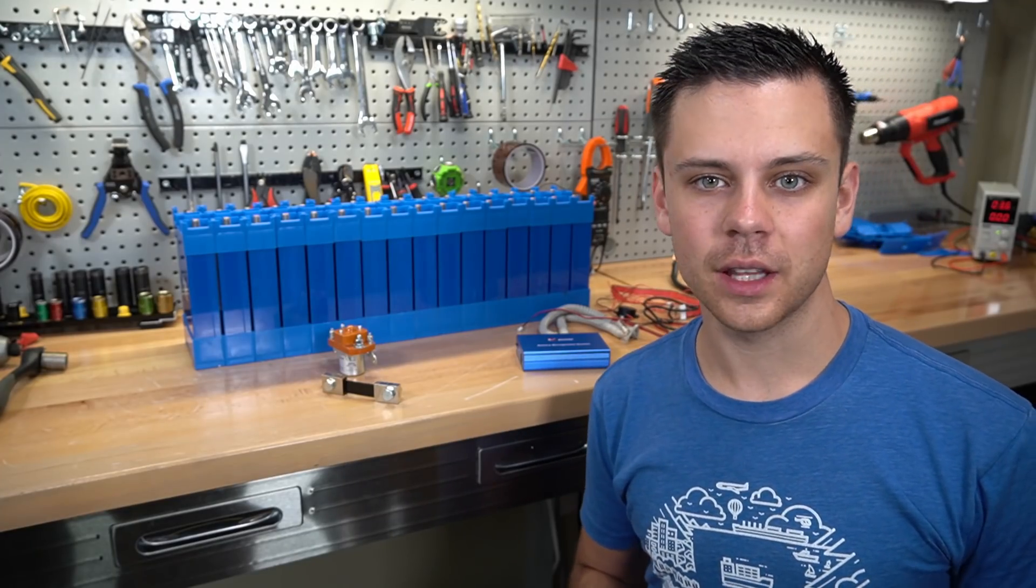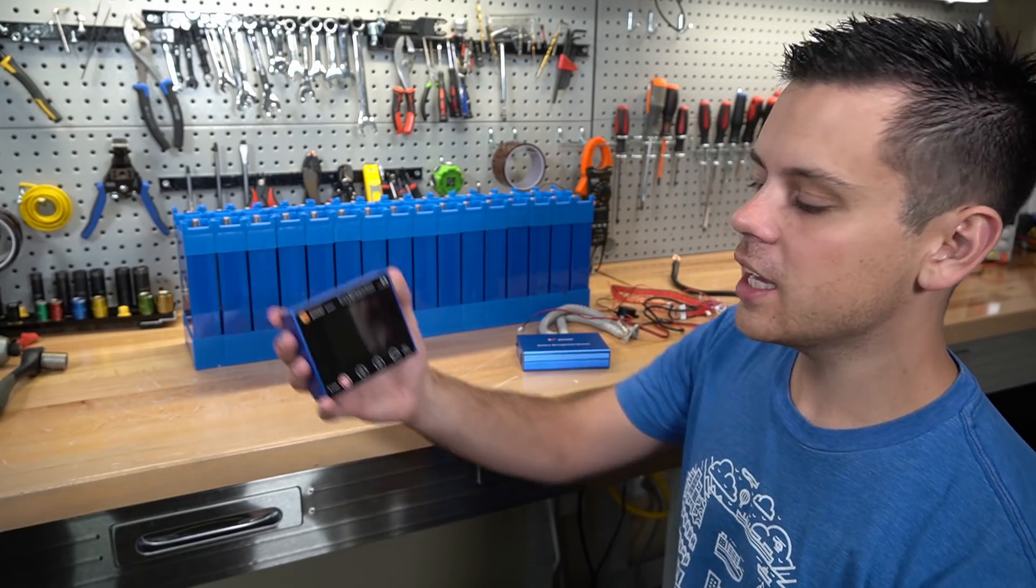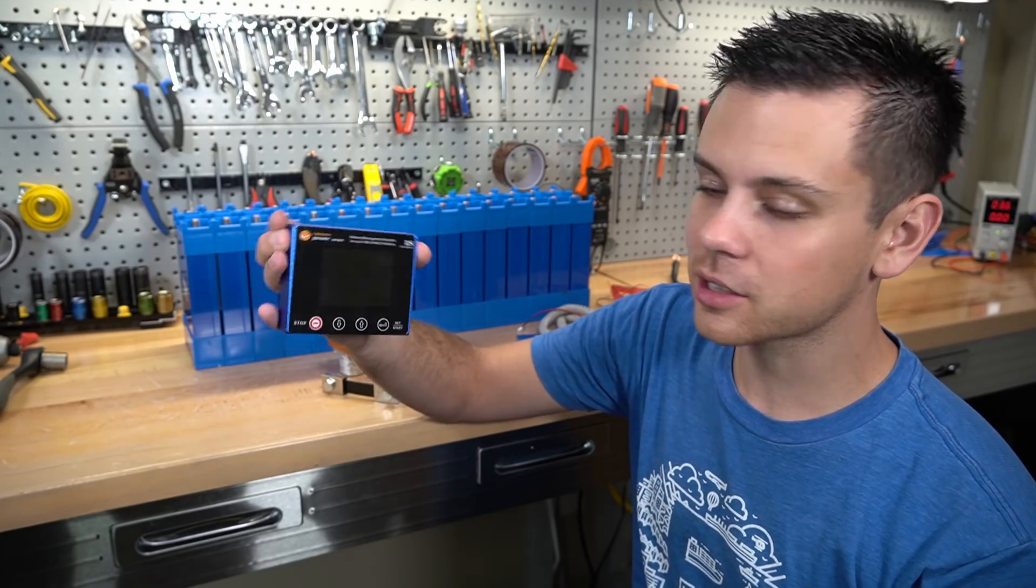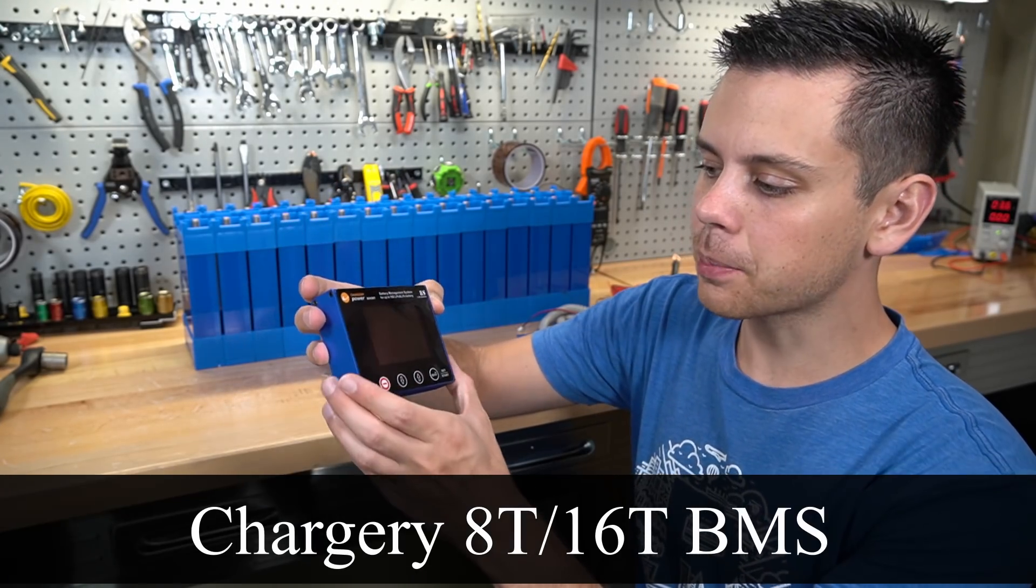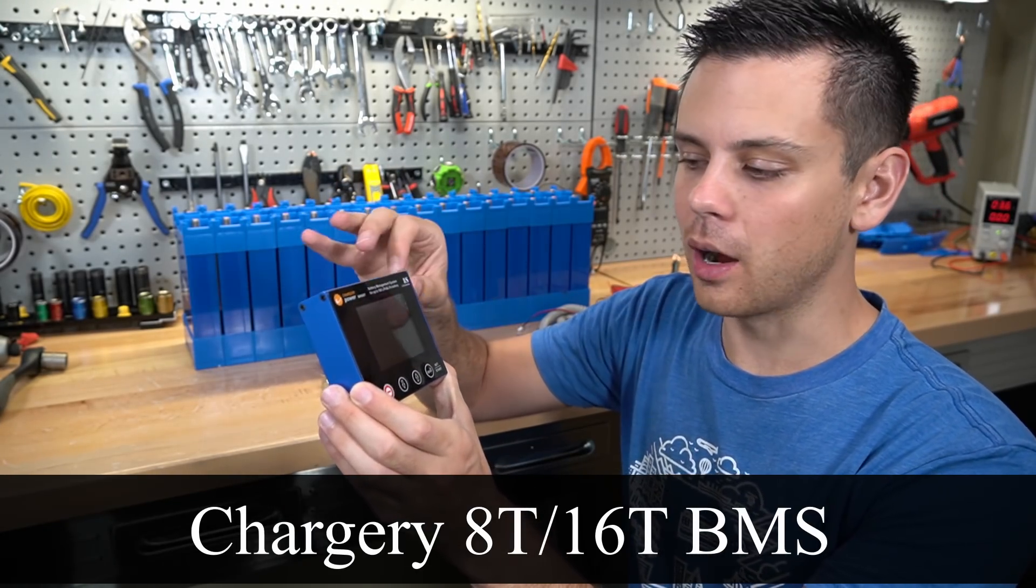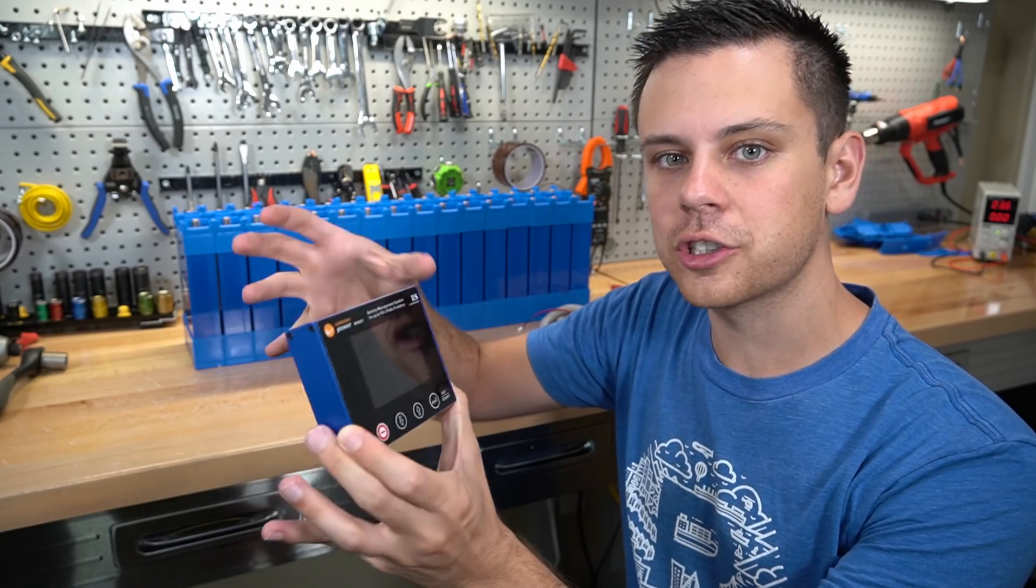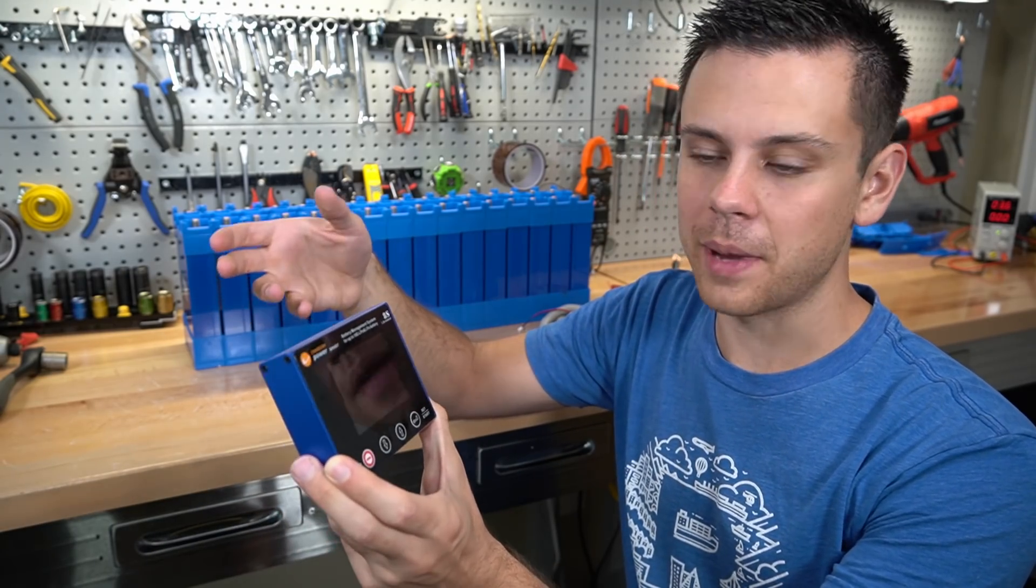Today we're going to build a 24 volt lithium iron phosphate battery bank with a new type of BMS. This is called the Chargery and this is probably the best bang for your buck and you can actually use it for large scale off-grid solar battery bank installations.